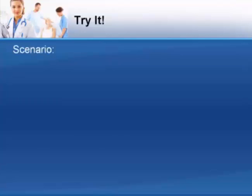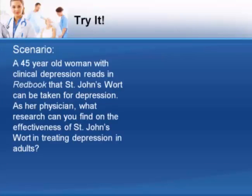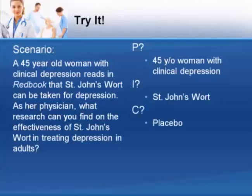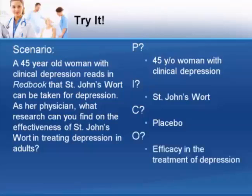Let's try one for practice. Consider the following scenario: a 45-year-old woman with clinical depression reads in Redbook that St. John's wort can be taken for depression. As her physician, what research can you find on the effectiveness of St. John's wort in treating depression in adults? Using PICO, let's identify the important concepts. First, who is the patient? The patient is a 45-year-old woman with clinical depression. The intervention being considered is St. John's wort. The comparison treatment is a placebo. The desired outcome is efficacy in treatment of depression.